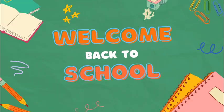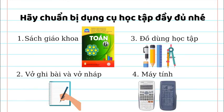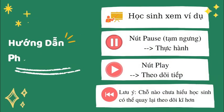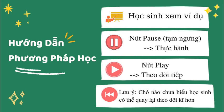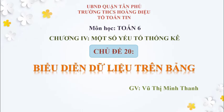Xin chào tất cả các em học sinh. Cô xin tự giới thiệu, cô tên là Vũ Thị Minh Thanh, hiện đang công tác tại trường trung học cơ sở Hoàng Diệu, quận Tân Phú. Hôm nay cô sẽ hướng dẫn các em chủ đề 20: Biểu diễn dữ liệu trên bảng, nằm trong bộ môn Toán 6, thuộc chương 4: Một số yếu tố thống kê.